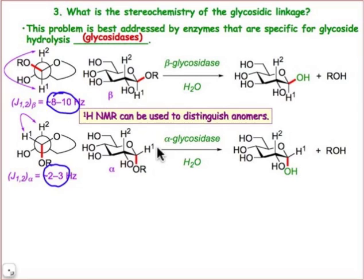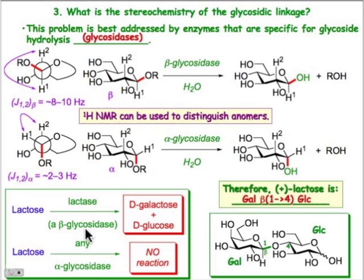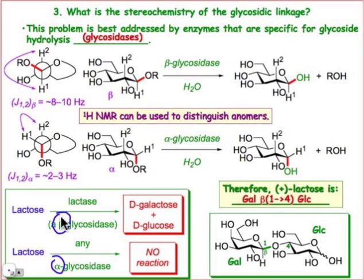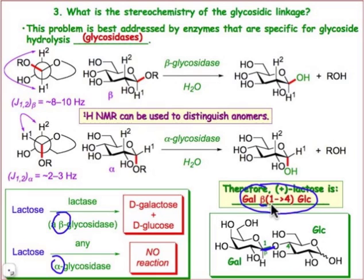So we could either use NMR or glycosidase. Here we'll use glycosidase: when we subject lactose to lactase, which is a β-glycosidase, we end up with a pair of monosaccharides. When we subject lactose to an α-glycosidase, we end up with no reaction. Since it's the β-glycosidase that performs the cleavage of that disaccharide, we can conclude that lactose is β-linked — in other words, there's an equatorial carbon-oxygen bond at the C1 position of galactose. The complete structure is therefore galactose β-linked at its anomeric position C1 to the hydroxyl group at carbon 4 of glucose.